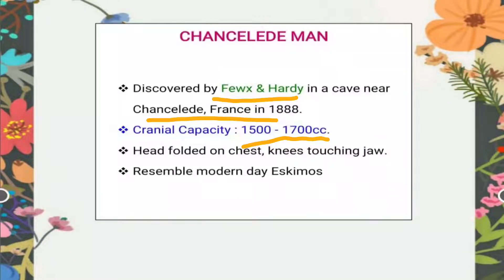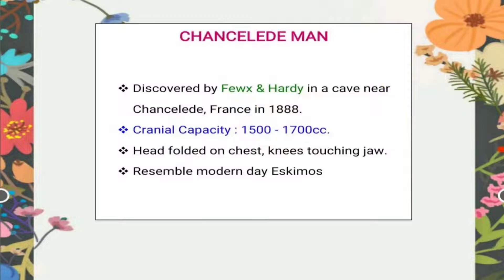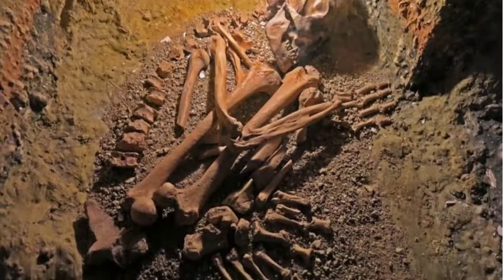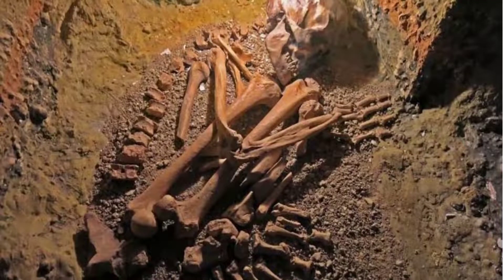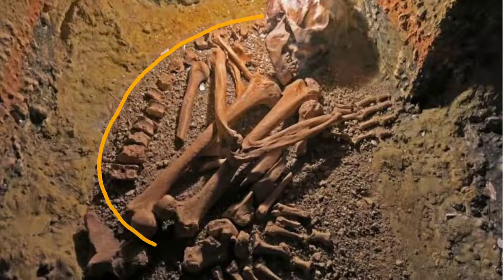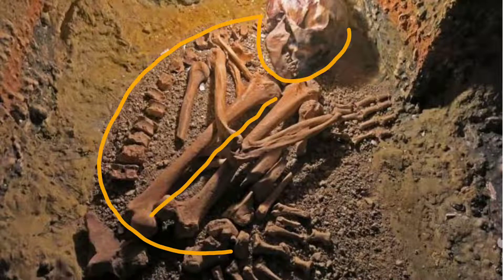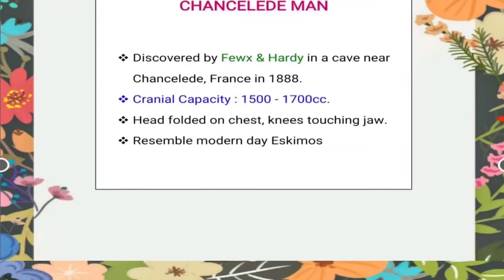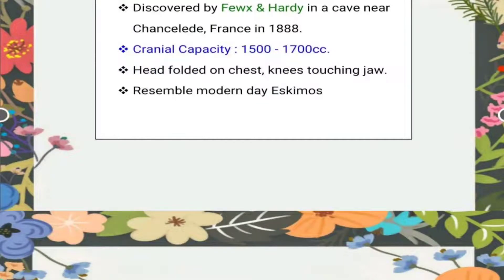The cranial capacity of Chancelade man is 1500 to 1700 CC. They have a very characteristic feature: the head of the Chancelade man is folded on its chest and the knees are touching the jaw, meaning he is somewhat in a C-shape. As you can see in the diagram, the skull skeleton shows the head folded on the chest and the knees touching the chin.